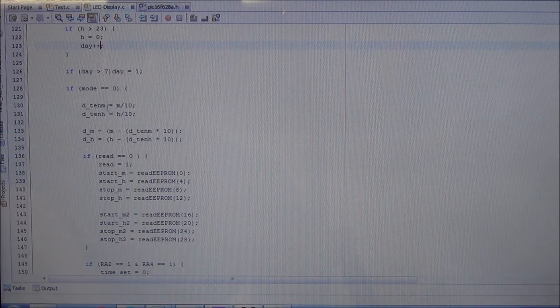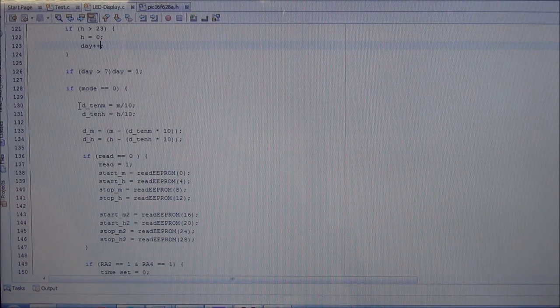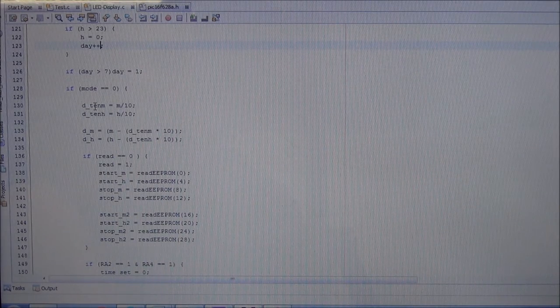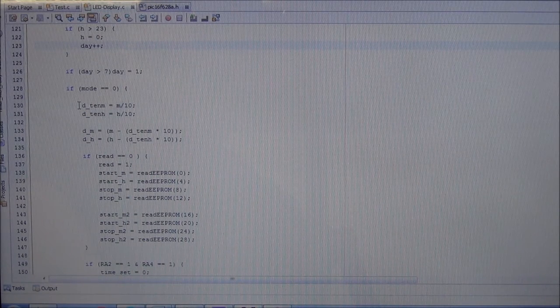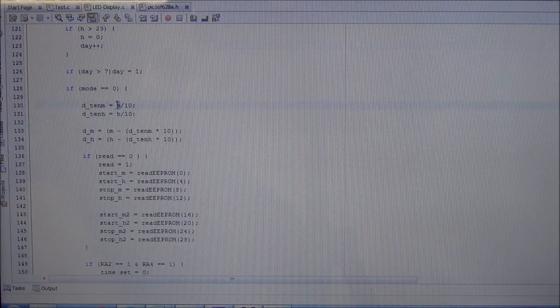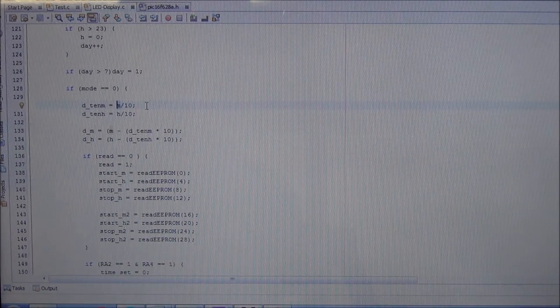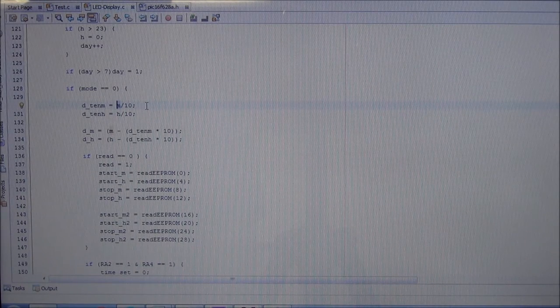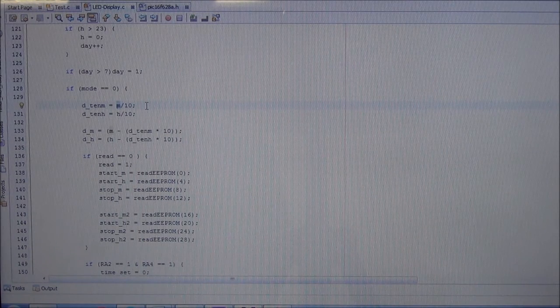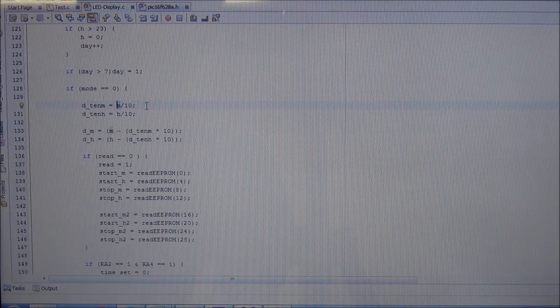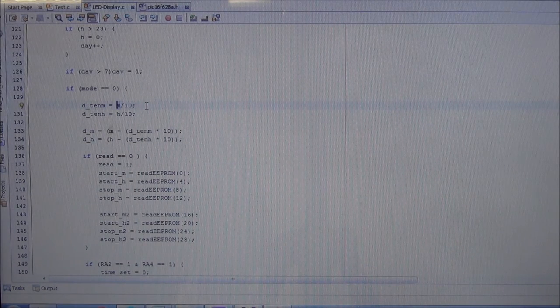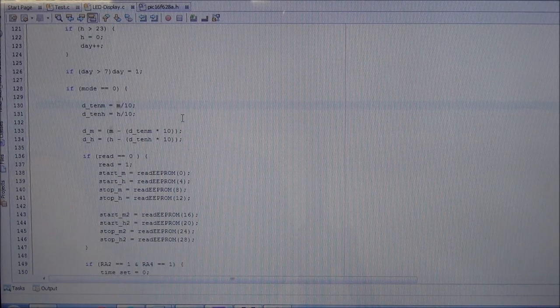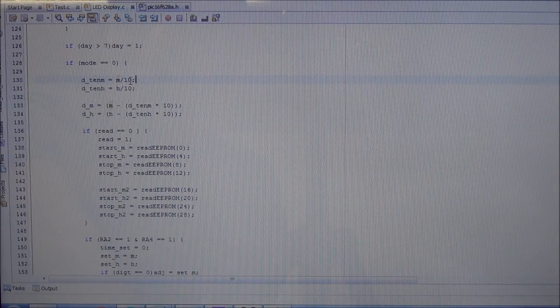And we'll then enter mode zero, and here we will divide our variables into the displayed variables. So if we have a 12 for example, we'll have to divide that into a 1 and a 2. And to get the most significant digit we can take the minute variable and divide it by 10. By doing this with characters or integers we cannot have anything after the decimal place, and that will just be deleted. Even if it's 15 divided by 10, that will be a 1 also, it will not round up. So here it's actually an advantage that it's not rounding off to the nearest whole number.